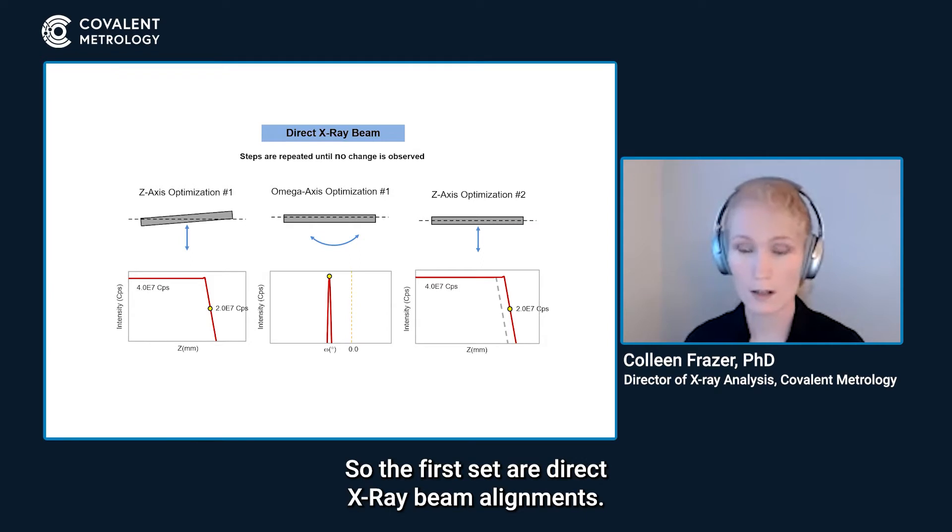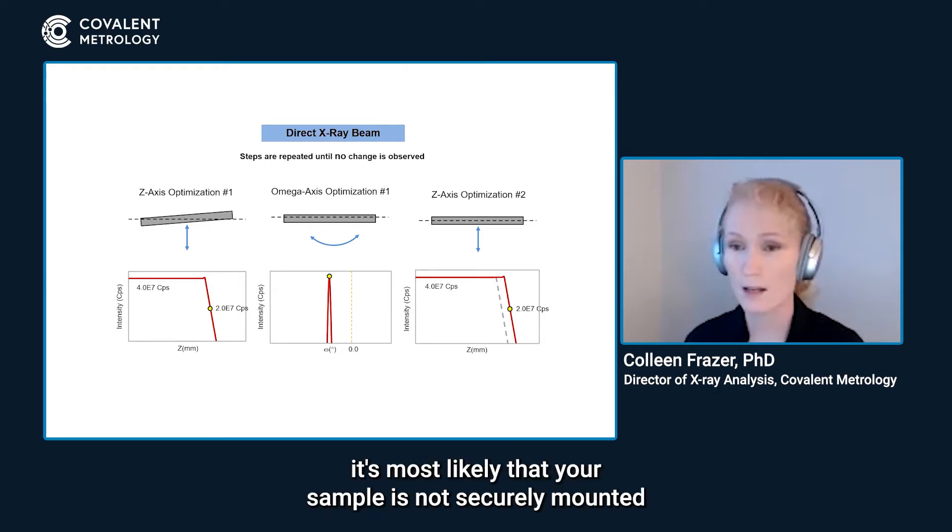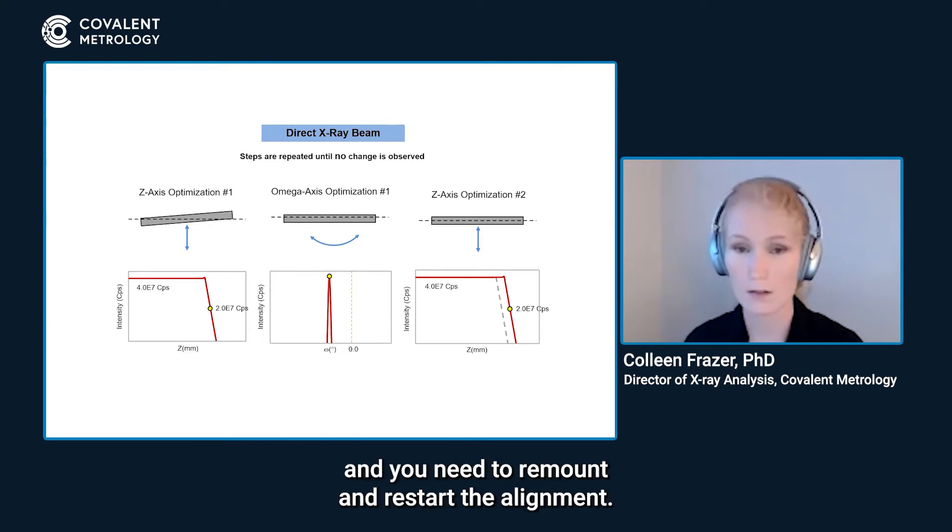The first set are direct X-ray beam alignments. We're blocking the beam with a sample effectively. These two steps are repeated alternately until there are no changes observed. If you repeat these three, four times and you keep seeing significant changes in angles, it's most likely that your sample is not securely mounted and you need to remount and restart the alignment.